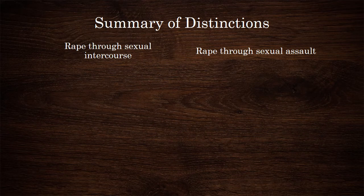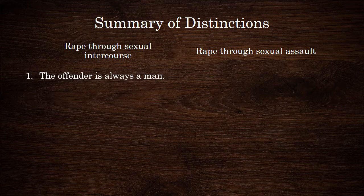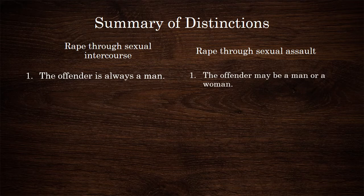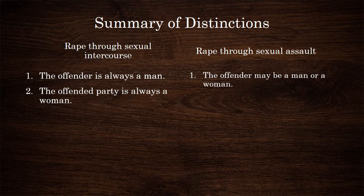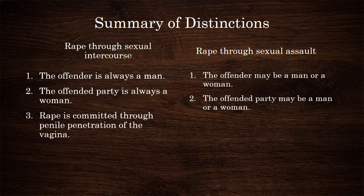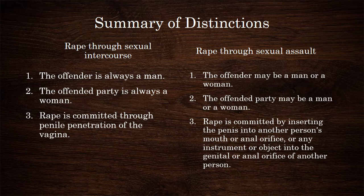Let us now make a summary of the distinctions between rape through sexual intercourse and rape through sexual assault. In rape through sexual intercourse, the offender is always a man, while in rape through sexual assault, the offender may be a man or a woman. In rape through sexual intercourse, the victim is always a woman, while in rape through sexual assault, the victim may be a man or a woman. In rape through sexual intercourse, the rape is committed through penile penetration of the vagina, whereas in rape through sexual assault, it is committed by inserting the penis into another person's mouth or anal orifice, or any instrument or object into the genital or anal orifice of another person.